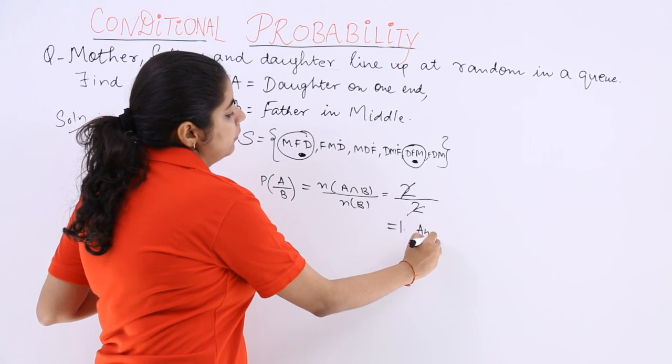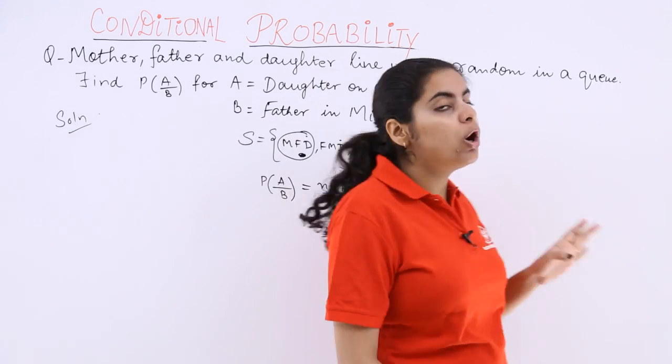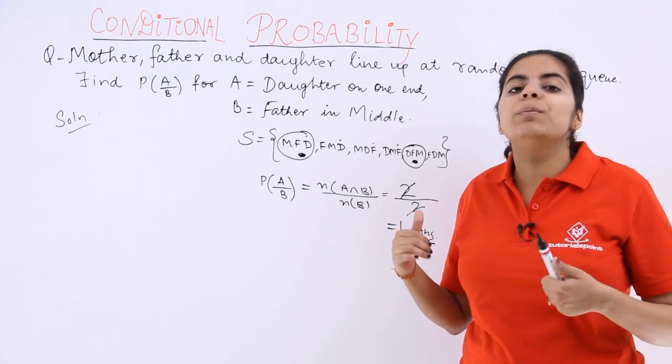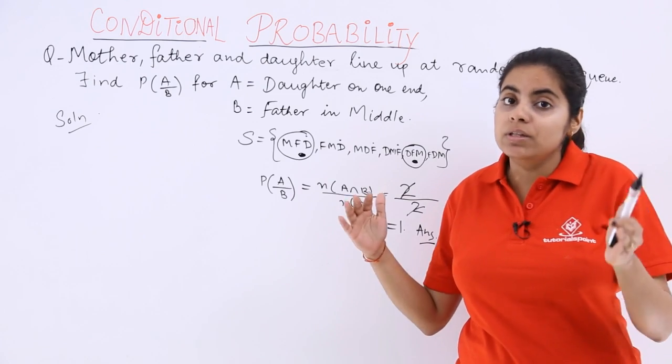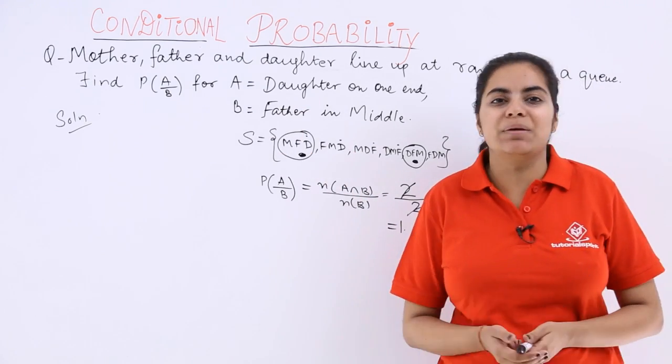So this means this is a sure event or a definite event. Now you will not always get the answer as 1 or 0. This can be anything between 0 and 1 or even 0 or 1 also depending upon the question. So this is how you do this type of a question.